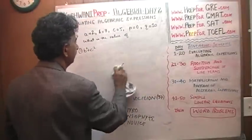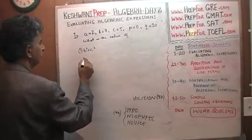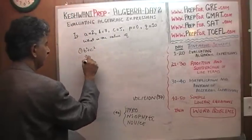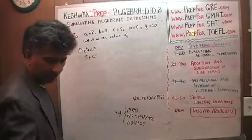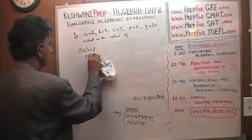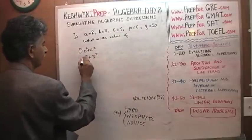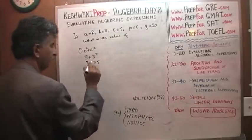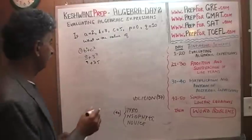Number one is b squared plus c squared. b we know is 3, so it's 3 squared plus c squared which is 5. So it's 3 squared which is 9 plus 25. We know that 10 plus 25 is 35, so 9 plus 25 must be 34.